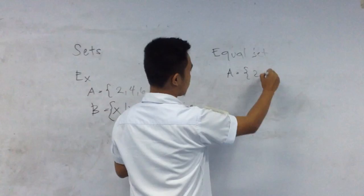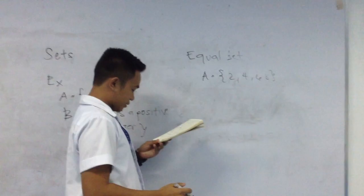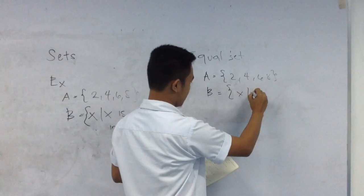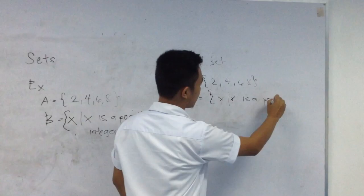Let A and B be two sets. A and B are equal if A and B have exactly the same elements. For example, A is equal to {2, 4, 6, 8}.